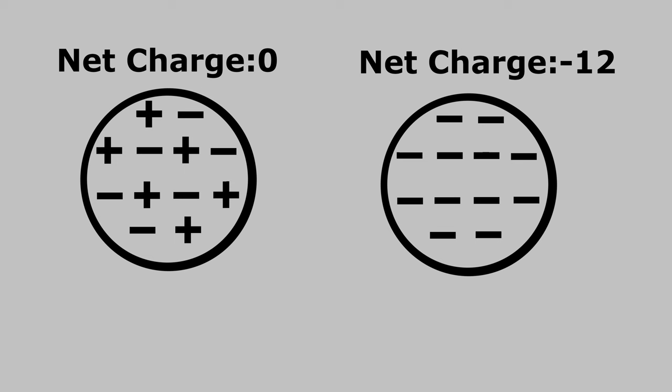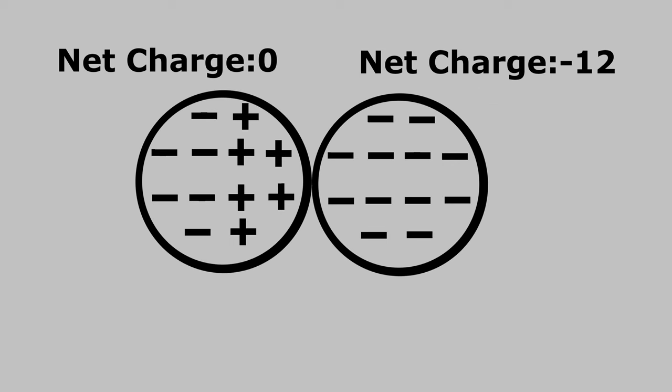As it turns out, opposite charges attract and like charges repel. So the positive charges on my neutral object move towards the negative object, and the negative charges move away. The object itself is still neutral — it has an equal amount of negatives and positives — but they are now arranged non-symmetrically. This means my neutral object is attracted to the negative object, because the electric force drops off as 1 over r squared, meaning the attraction force that is closest is the most powerful.